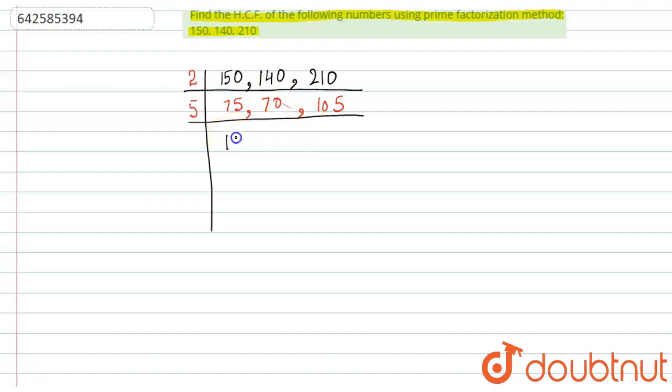So we get 15, 14, and 21. Clearly, we cannot go further because we have consecutive numbers, so we do not have any common factors between 15, 14, and 21 except one.